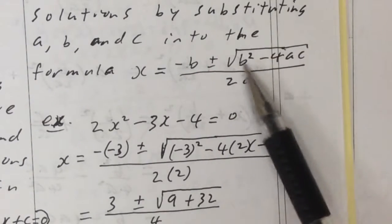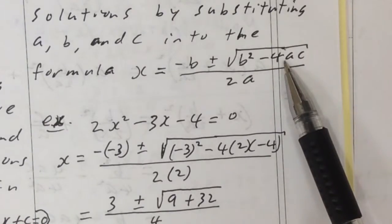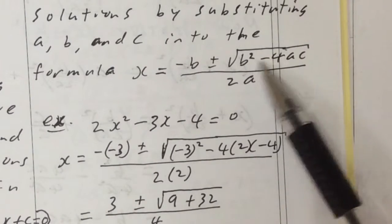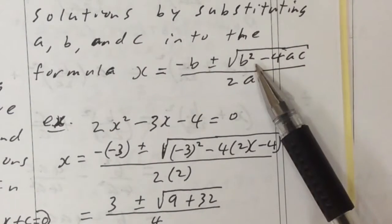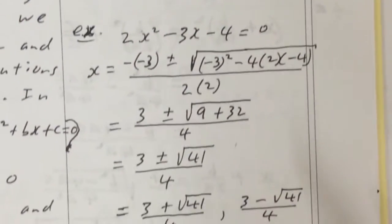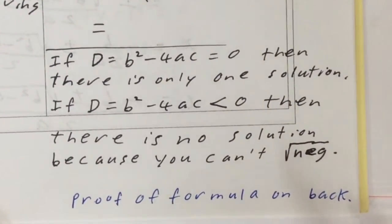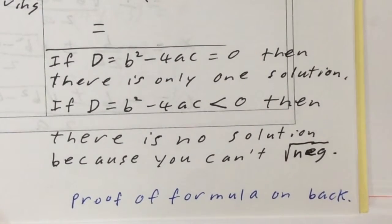If the discriminant is negative, as we've seen before, you cannot take the square root of a negative number. So because you can't take the square root of a negative number, there is no solution when the discriminant is negative. So this I've just summarized right here.